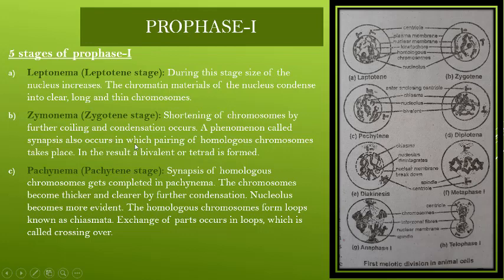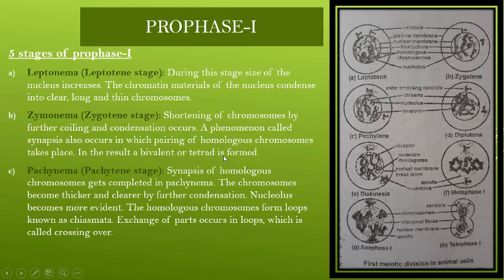The second stage is the Zygotene stage. There is also shortening of chromosomes, coiling, and condensation. Throughout Prophase 1, the shortening and thickening of chromosomes will continue, becoming more visible inside the nucleus. Zygotene is a very important stage because synapsis begins here — the homologous chromosomes start to pair with each other. The chromosomes take on a bivalent or tetrad form.